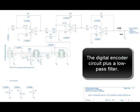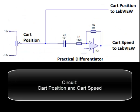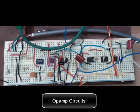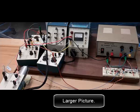The digital encoder circuit plus a low-pass filter. This circuit shows the cart position and cart speed signals. The op-amp circuits. And a larger picture.